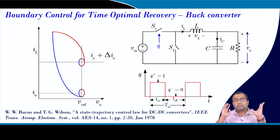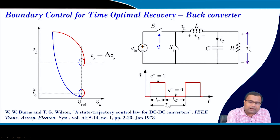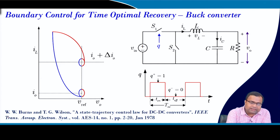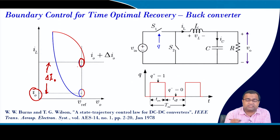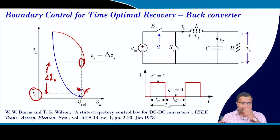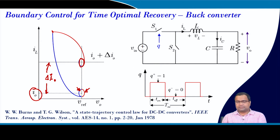This trajectory looks something like this: we have an initial load current i0, and there is a load step transient with a step size of delta i0, which then reaches another trajectory. The blue trajectory is the on-state trajectory and the red one is the off-state trajectory, and it reaches the next operating point in one switching action.